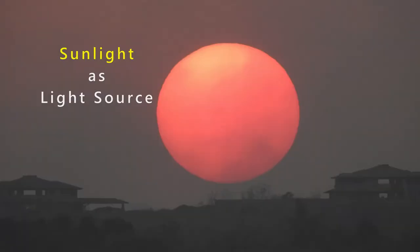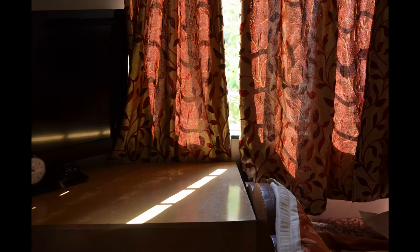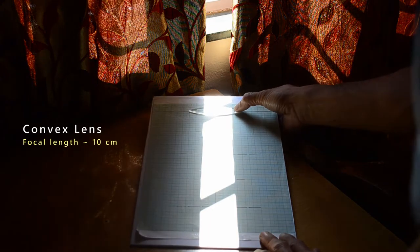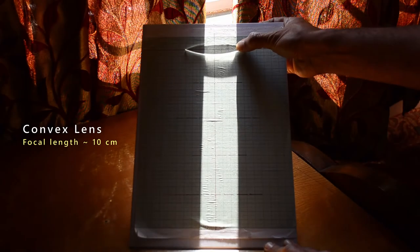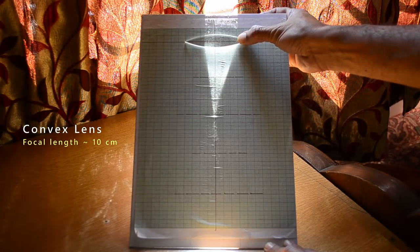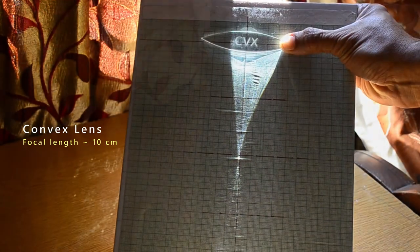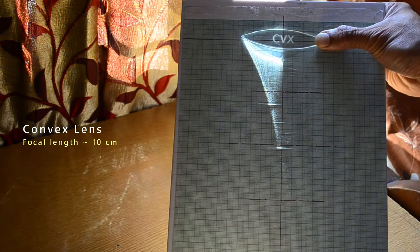Instead of laser, we can use sunlight to study refraction of light with different lenses. I use a small beam of sunlight coming through a window in a dark room. Tilting the graph paper to align itself with the angle of incident rays renders a very beautiful pattern. All rays converge at a focal point.